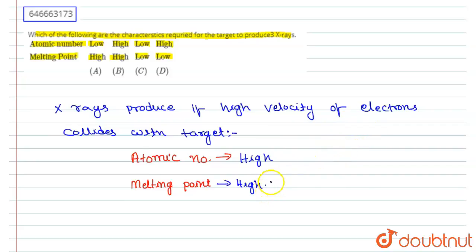That's why melting point should be high and the atomic number should be high, so that it is less stable and X-rays can easily be produced. So in this way, atomic number and melting point both should be high. So B is the right option for this question.